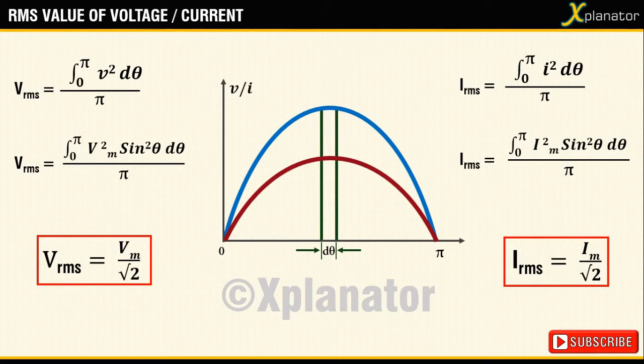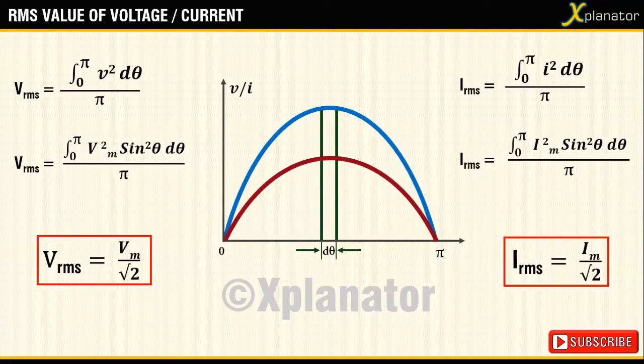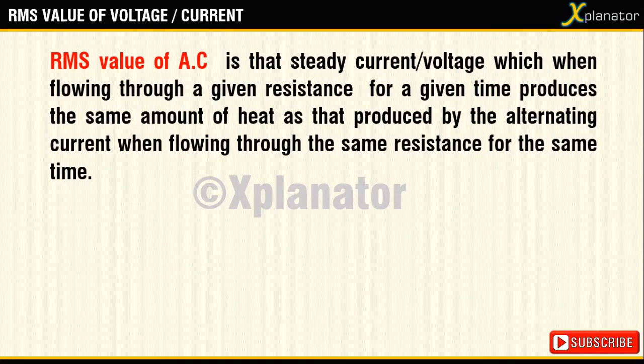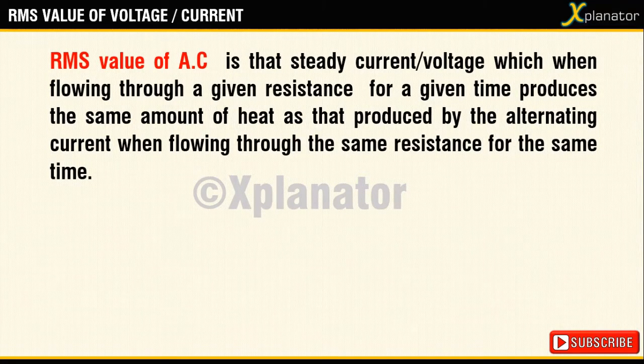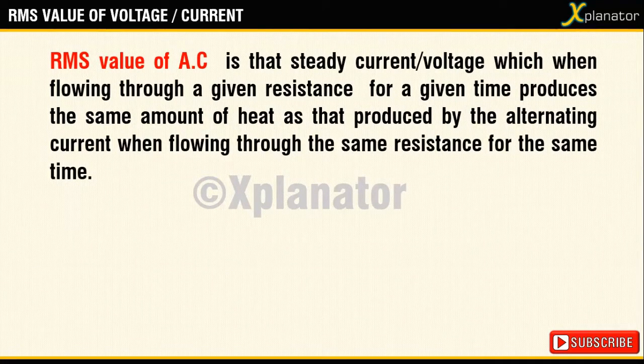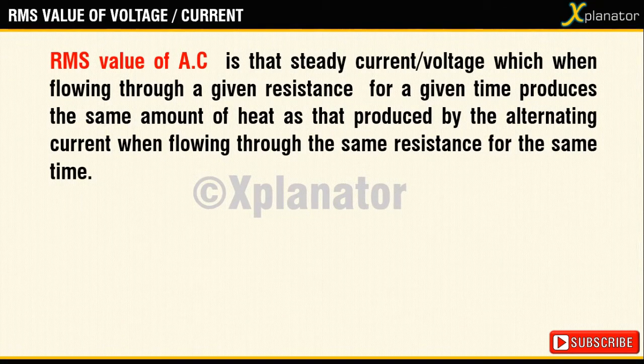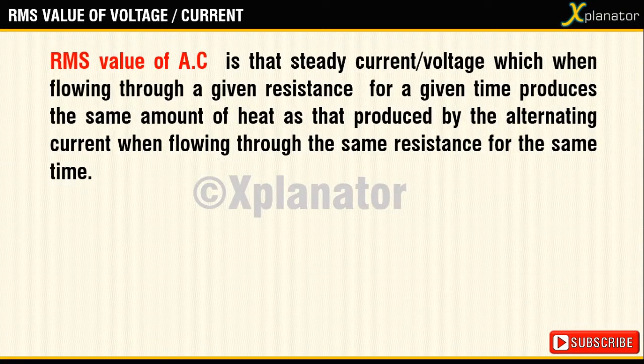But before starting, let's take a quick look at the definition of RMS value which reads: RMS value of an alternating current or voltage is that steady current or voltage which when flowing through a given resistance for a given time produces the same amount of heat as that produced by an alternating current when flowing through the same resistance for the same time.